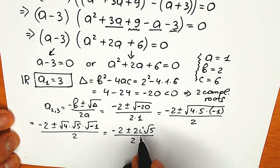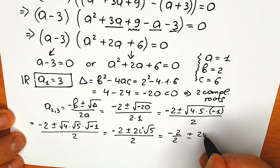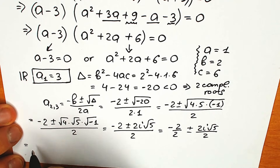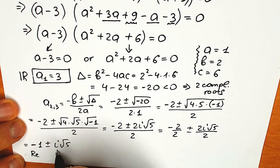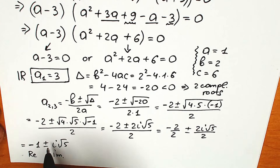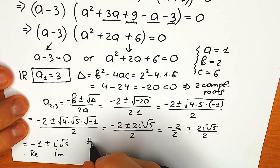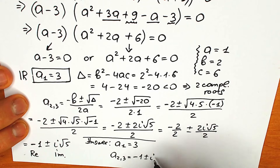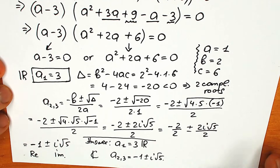We can cancel the factor of 2: splitting it as −2/2 ± 2i√5/2 gives us the real part equal to −1 and the imaginary part equal to ±i√5. So our final answer: a₁ equals 3, and a₂,₃ equal to −1 ± i√5. These two roots are complex and this one is a real number root.